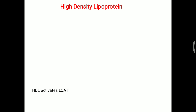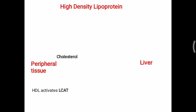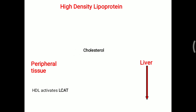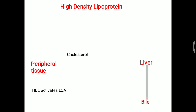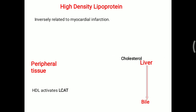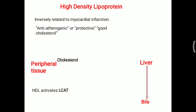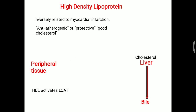With the activation of LCAT, cholesterol is transported from peripheral tissue to the liver, and ultimately excreted with the help of bile. Bile is the only route to excrete cholesterol from our body. This HDL level is inversely related to myocardial infarction, so it is called anti-atherogenic or protective in nature — otherwise known as good cholesterol — because it shifts cholesterol from peripheral tissue to the liver.